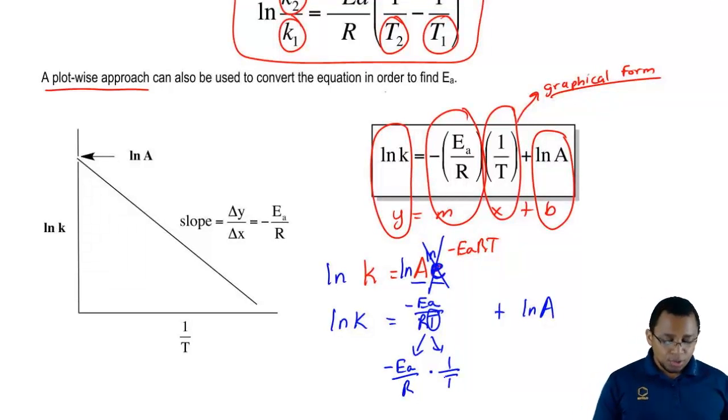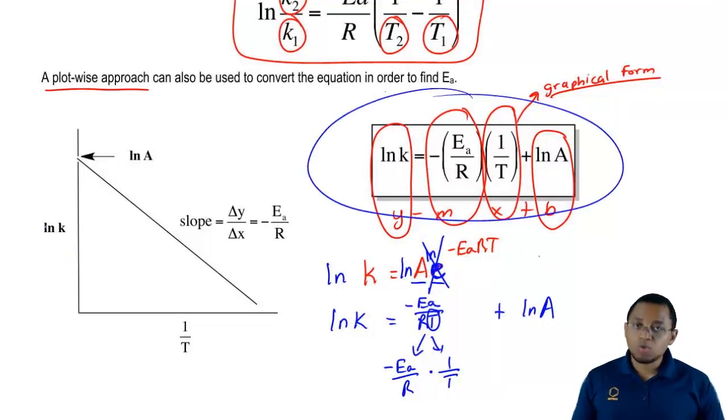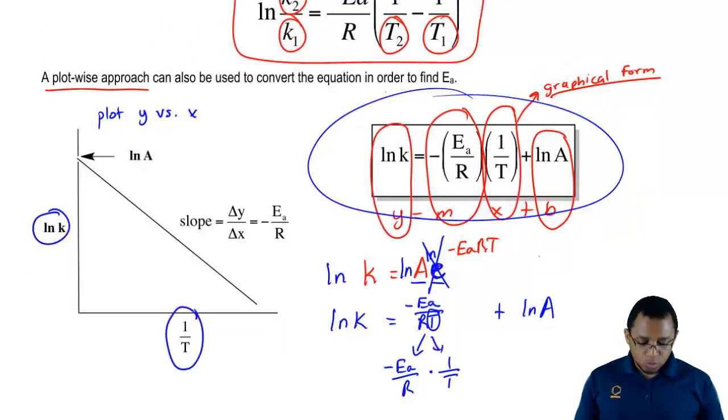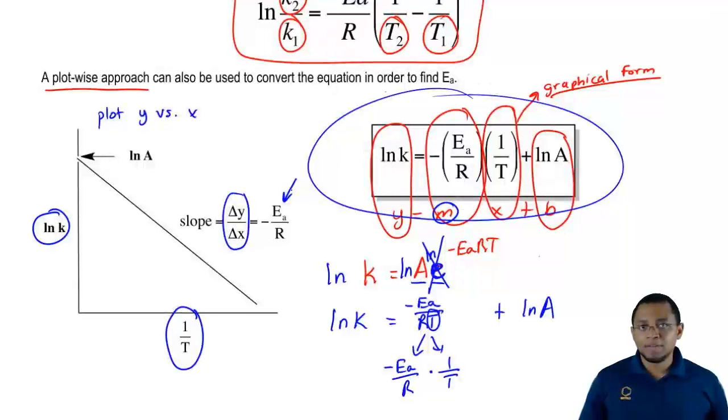We'll see how best to use this later on and realize that this equation here relates to this graph here. Remember, every time we plot something, it's y versus x. My y is lnk, my x here is 1 over T. Ea over R is m, which is my slope. Remember, slope is just the change in y over the change in x. It's in this way that we can find the energy of activation. Later on when we do calculations, we'll see how best to use this type of equation.